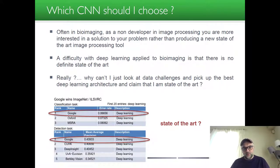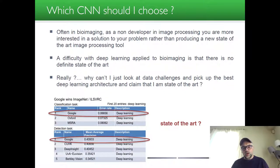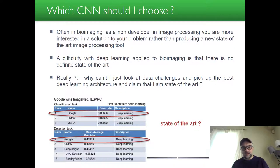One approach is to look at data challenges organized in computer vision and pick the best deep learning architecture from such a challenge and claim that you are state of the art. For instance, considering the well-known ImageNet dataset, there are challenges on how to classify images, and you can just pick the best algorithm and apply it to your own images.